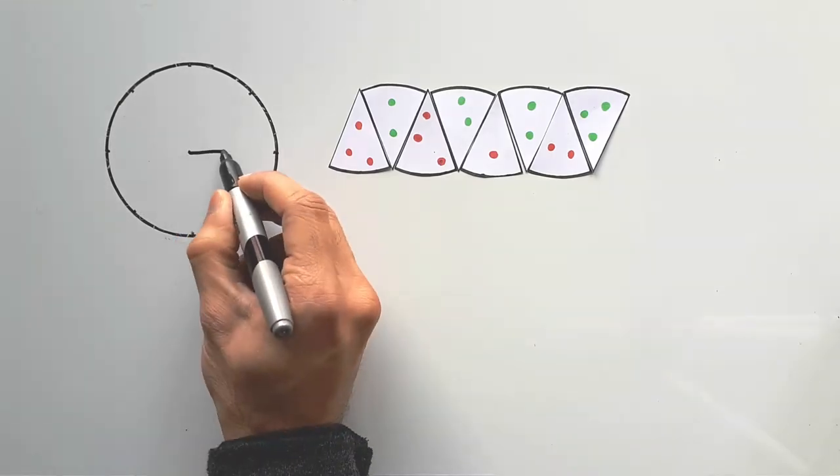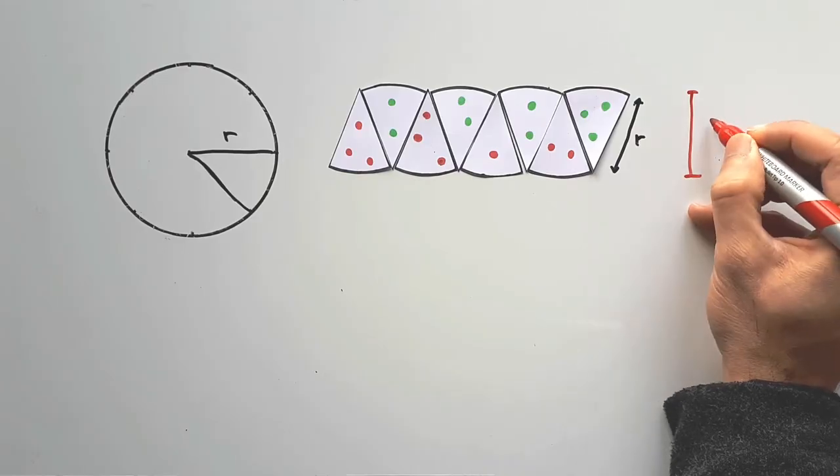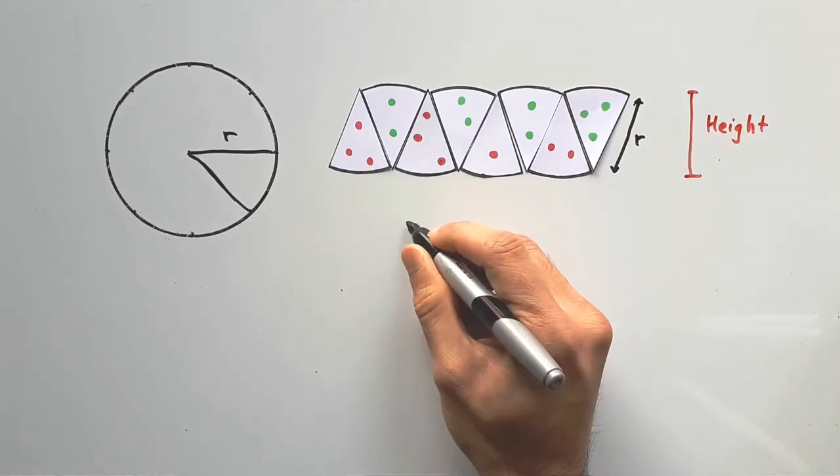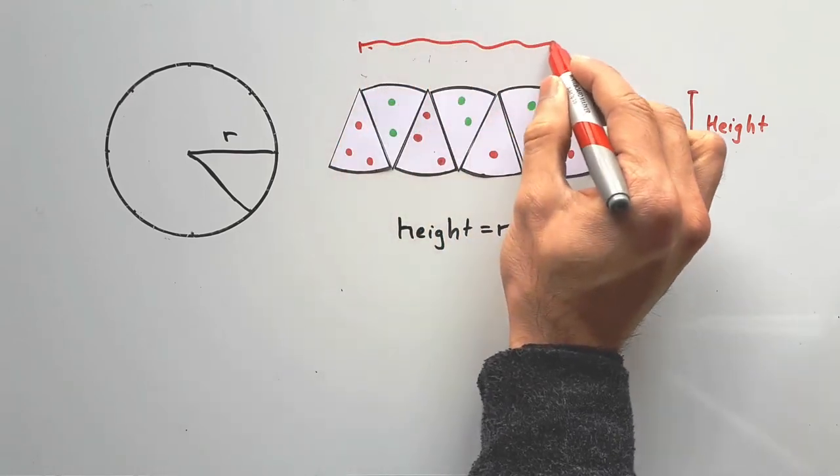The straight end on the last slice was the radius of the circle. So the height of our weird rectangle can be r.